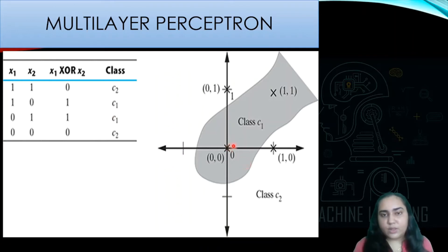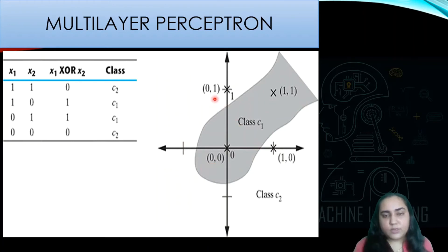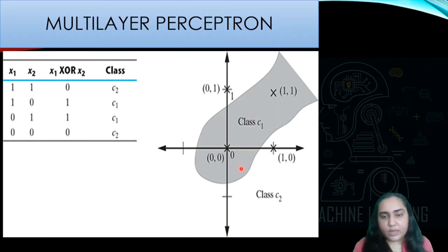If you plot those points on an x-y axis graph, the point (0,0) is the origin, (0,1) lies here, (1,0) lies here, and (1,1) lies here. According to XOR, (0,0) and (1,1) both belong to the same class, while (0,1) and (1,0) belong to the other class. You can clearly see that class one and class two are interleaved, meaning they are not linearly separable. Because they are not linearly separable, we cannot apply a simple Rosenblatt's perceptron — we need a multi-layer perceptron.